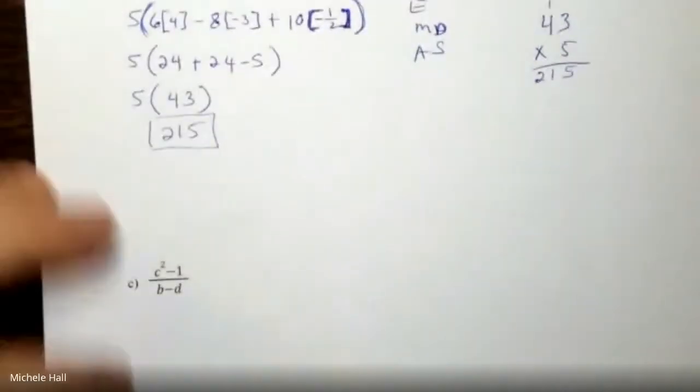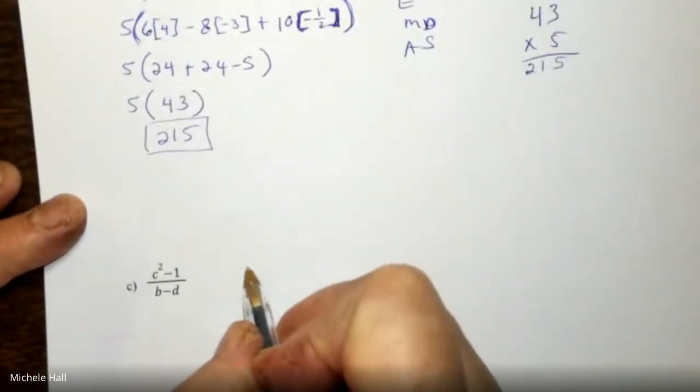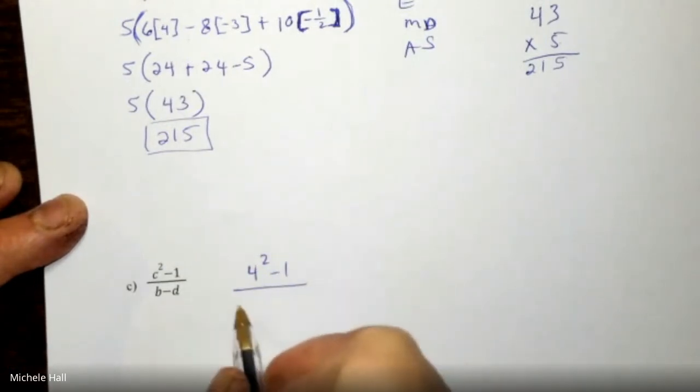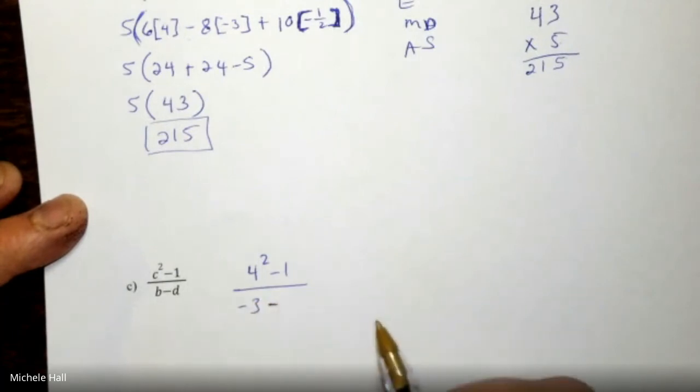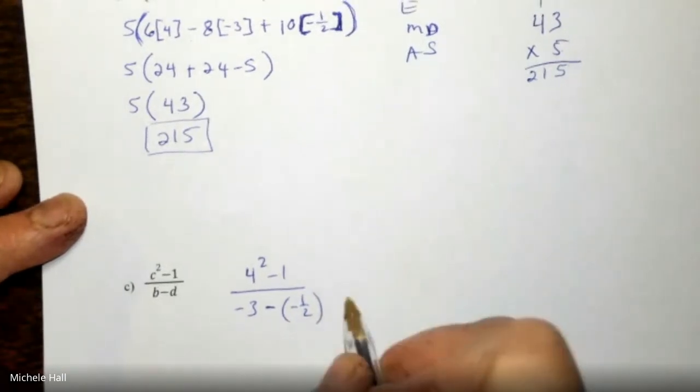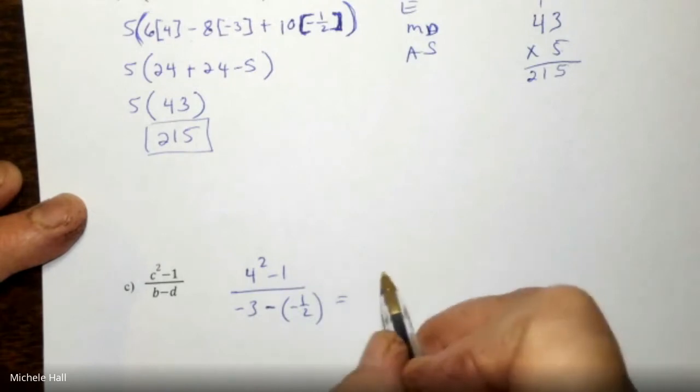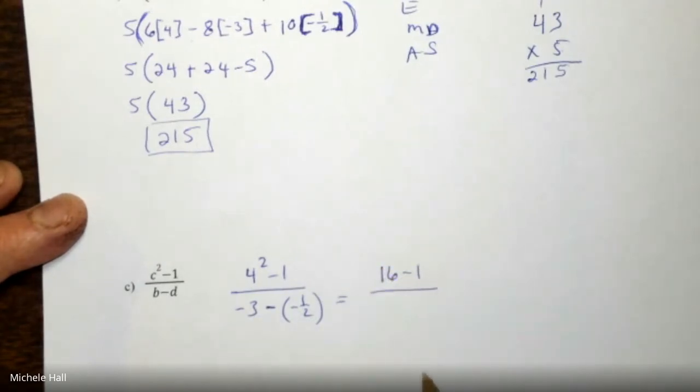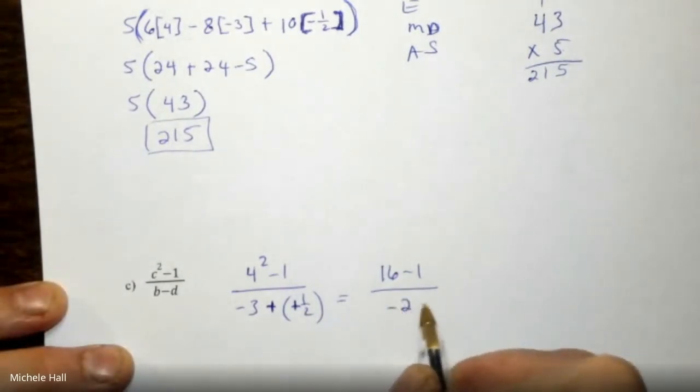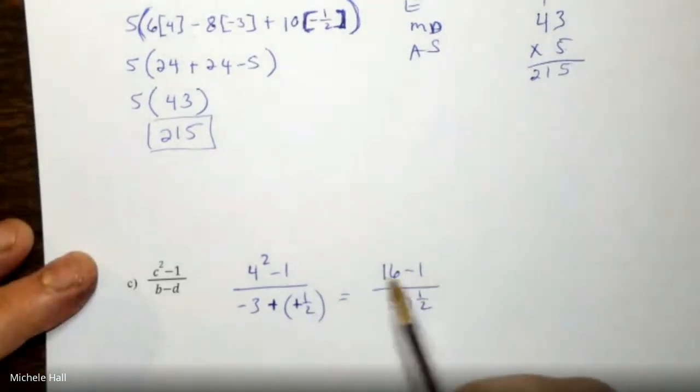Last problem. We have c² minus 1 divided by b minus d, which is a negative negative 1 half. 4 squared, 4 times 4 is 16 minus 1. In the denominator you need to clean up those double negatives. Negative times a negative becomes positive. We have negative 3 plus a half. 3 take away a half is 2 and a half, and that will be negative 2 and a half. 16 minus 1 is 15.